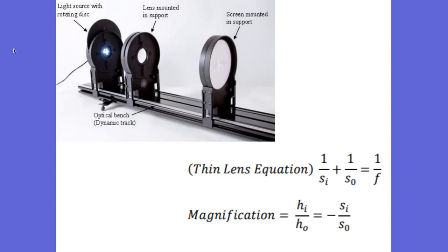The 1 over di plus 1 over do equals 1 over f, or the hi over ho equals negative di over do. And that s stands for distance, obviously. And yet, we can't do that this year.